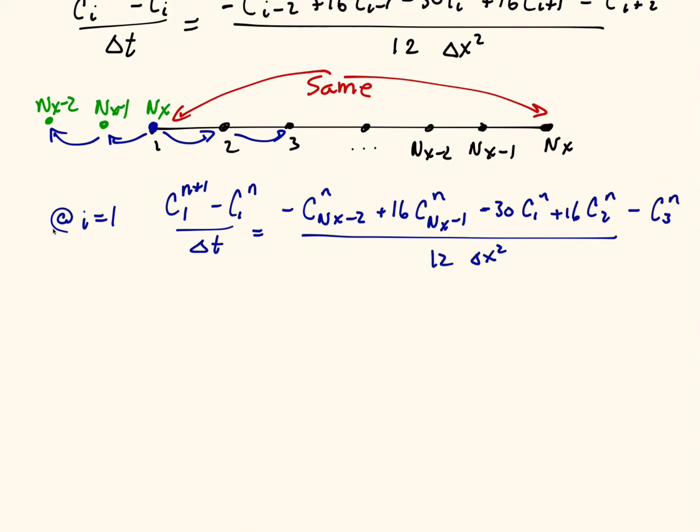If we're at the other end, if we're at i equals nx, then we could write the discretization. We can also use the fact that point 1 is the same as point nx, and we can write that cnx at the new time is equal to the value that we just computed for c1. So the new value at c1, we're going to transfer that over to cnx at the new time.